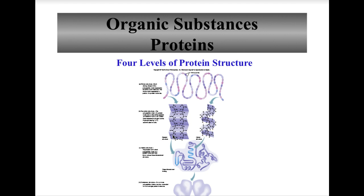Peptides are two to 100 amino acids. A polypeptide or protein consists of 100 to thousands of amino acids that have a specific function. As more amino acids are added, the four levels of protein structure come into play.